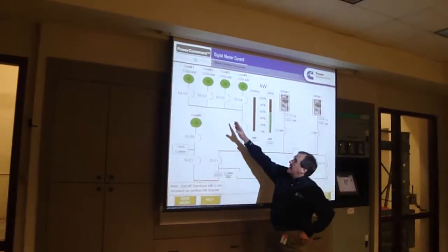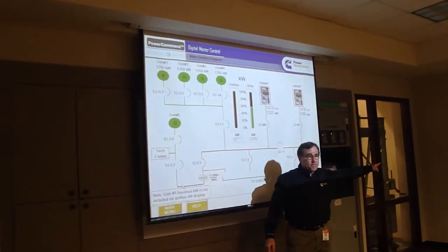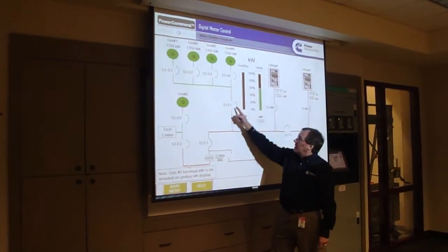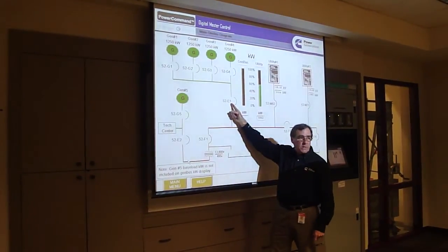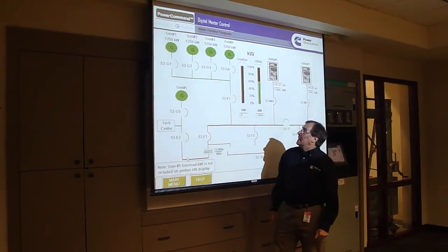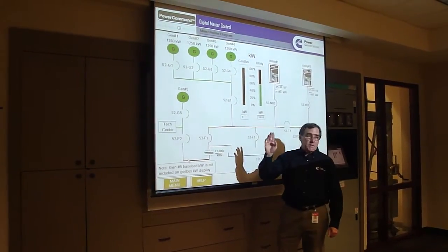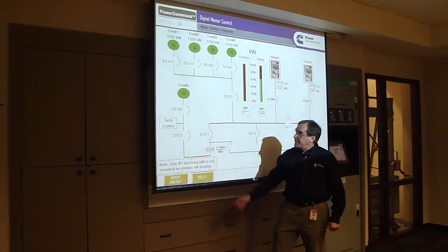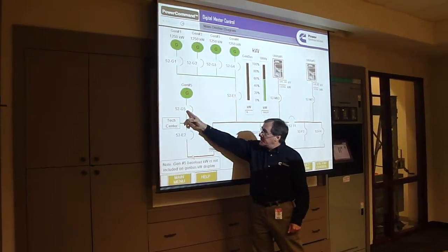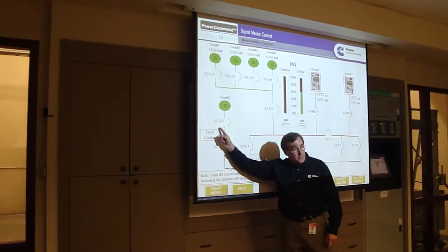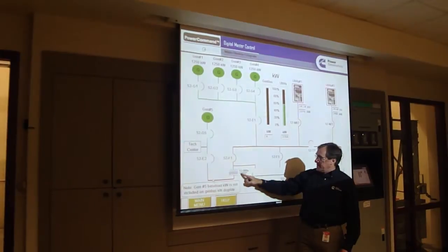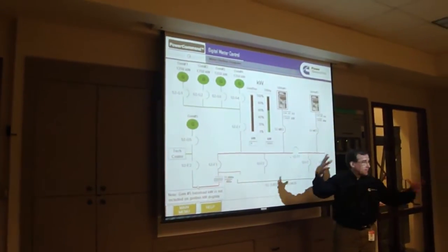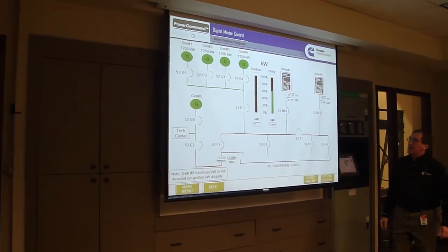Over here, you have the four generators that are in this room right here, and the four breakers that are in the room behind me. In the utility room on the other side is this generator main breaker. Another generator exists at our technical center across the parking lot — our tech center — and that one stands here and feeds our tech center at 480 volts. But then we feed it back in and tie it through a transformer back into our main bus so that all these generators can operate together on the same bus in any combination we need.